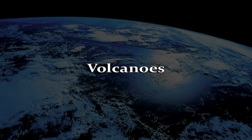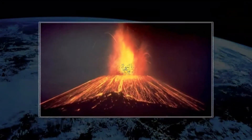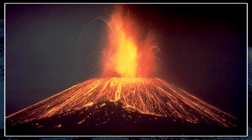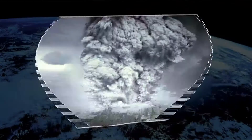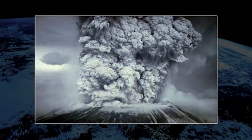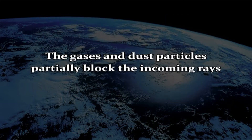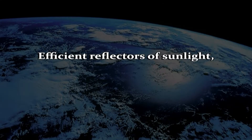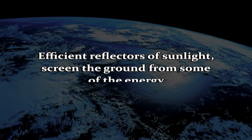Coming to one more cause: volcanoes. The volcanic activity may last only a few days, yet the large volumes of gases, water vapour, dust and ash can influence climatic patterns for years. Millions of tons of sulphur dioxide gas can reach the upper levels of the stratosphere from a major eruption. The gases and dust particles partially block the incoming rays of the sun, leading to cooling. Sulphur dioxide combines with water to form tiny droplets of sulphuric acid. These droplets are so small that many of them can stay aloft for several years. They are efficient reflectors of sunlight and shield the ground from some of the energy it would ordinarily receive from the sun.